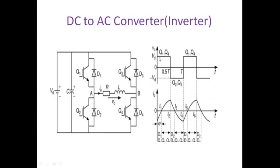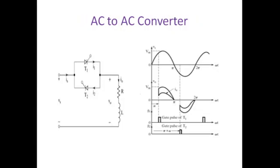The input is DC (constant), but the output is alternating between two values — that is why it is called alternating current. The current waveform through the load, assuming RL load such as a DC motor with some inductance, shows alternating behavior. In this way, DC is converted to AC. This is the DC to AC converter, also called an inverter.